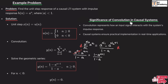Now let us understand the significance of convolution in causal systems. Convolution represents how an input signal interacts with the system's impulse response. Causal systems ensure practical implementation in real-time applications, where the output depends upon the past and present value of input but not upon the future value of input. This concludes our discussion of causal LTI systems.